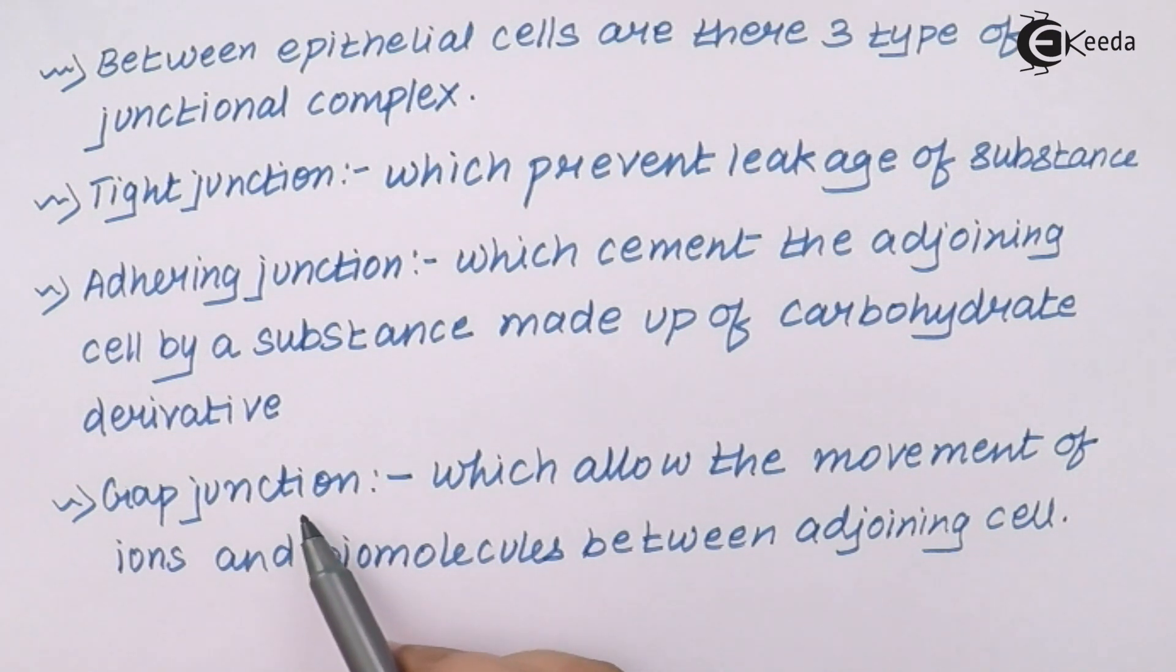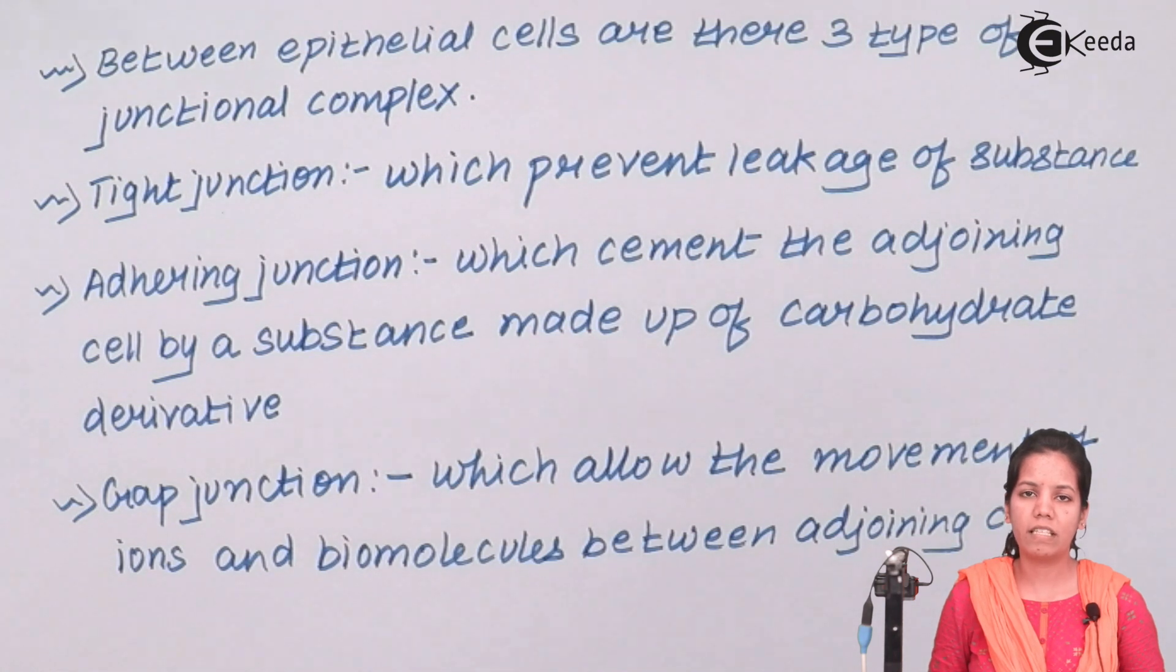Lastly, gap junctions. Gap junctions allow the movement of ions - sodium, potassium, magnesium, calcium - and biomolecules between adjoining cells. Ions are moving in and out of the cells. For example, sodium and potassium pumps present around the cell allow the ions to move depending upon the electric current flowing and how ions are exchanged between cells. The phospholipid bilayer around the cell also provides support to the gap junction during ion exchange.